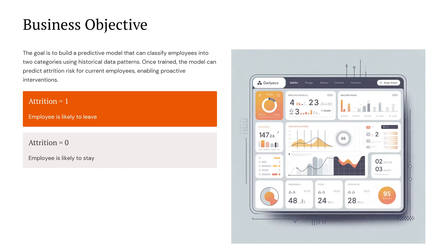Our main goal is to build a predictive model that can classify employees into two categories using past data. If the model predicts attrition equals 1, it means that employee is likely to leave. If it predicts attrition equals 0, the employee is likely to stay. With this model, companies can identify who might leave early and take proactive steps to retain them.